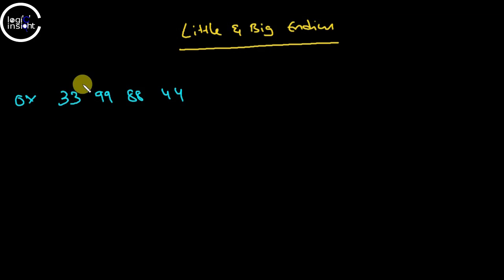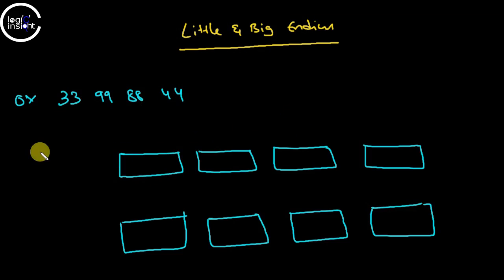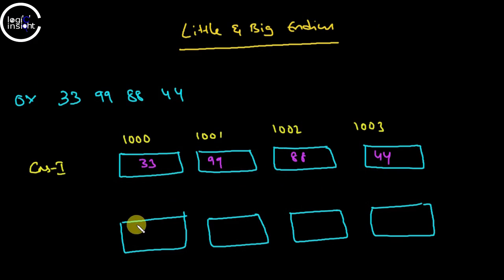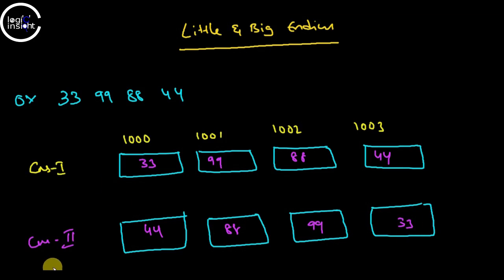We know that in hexadecimal, two digits require 8 bits, so for our number we require 32 bits total, which means 4 bytes. I can divide it into 4 bytes. Consider this as case one, where the address starts at 1000, then 1001, 1002, and 1003. I can store the data as-is: 33, 99, 88, 44.